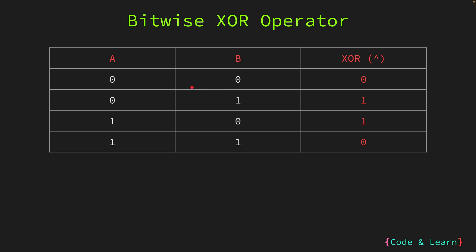Let's refer to the same table once again. In the first row we have 0 and 0 for both bits — the XOR operation will result in 0 as both bits are the same. In the second row, when the first bit is 0 and the second bit is 1, or vice versa, the XOR operation will yield 1 as one bit is set while the other is not. The fourth row represents a case where both bits are 1 — the XOR operation will result in 0 as both bits are the same.